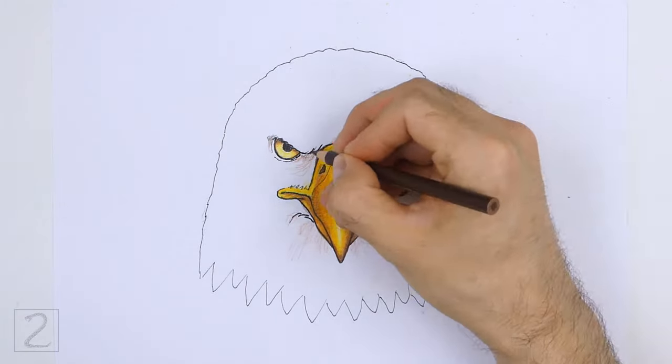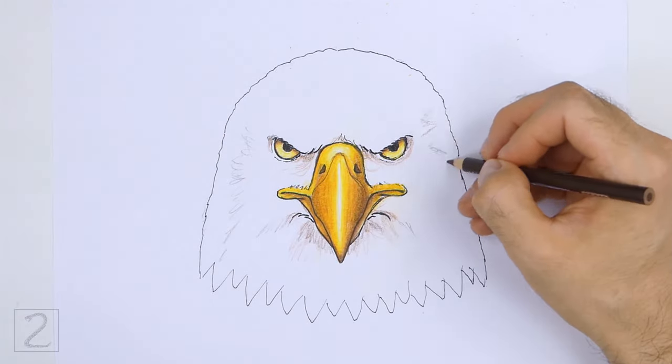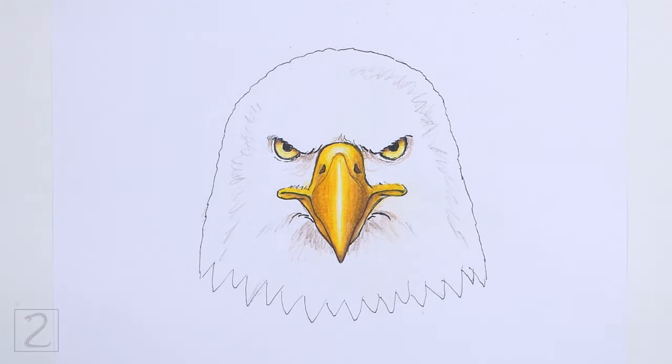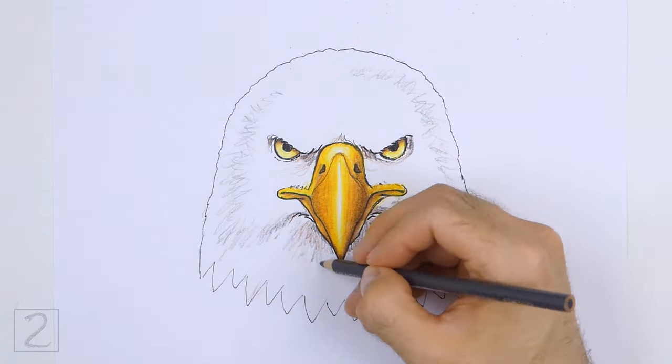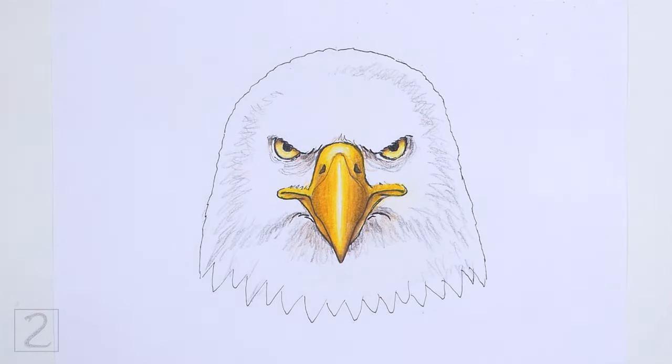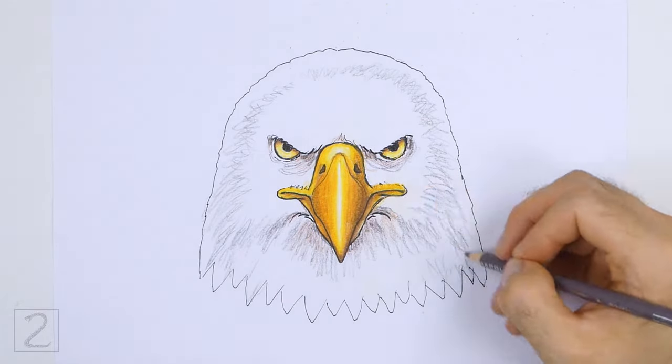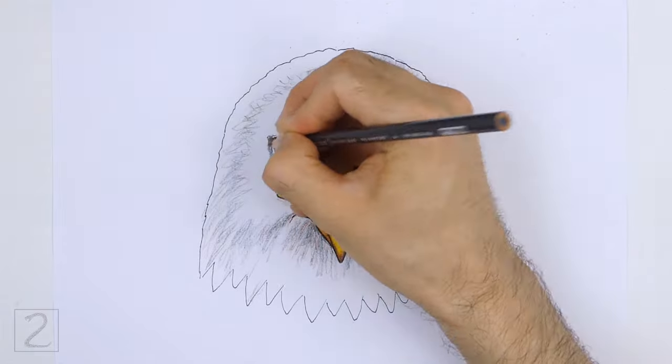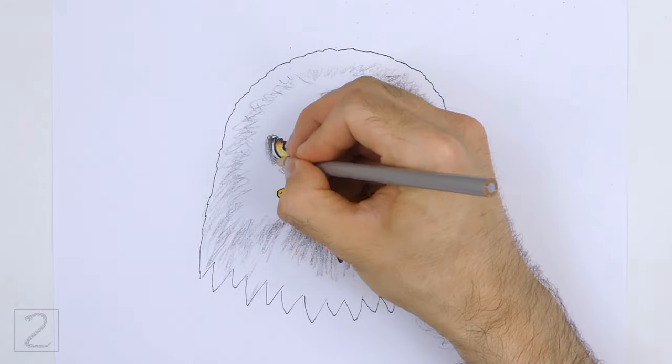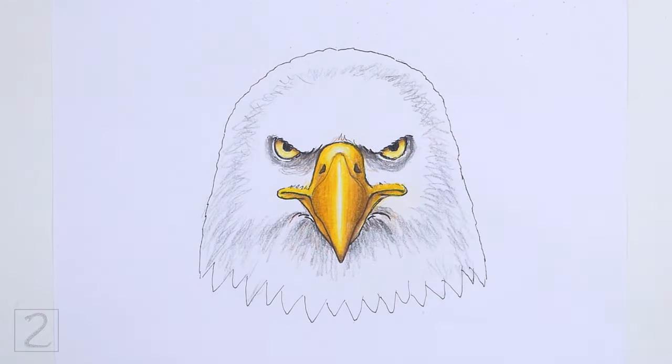Use gray throughout the head to create shadows. Shadows will give the figure more dimension and volume. Color using a series of short strokes to create a feathery texture. Add a dark shadow around the eyes and under the beak. Color using strokes that go in the direction of the feathers. The feathers radiate outward from the beak.